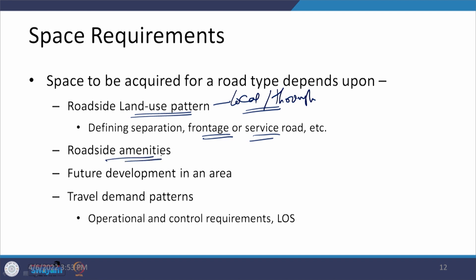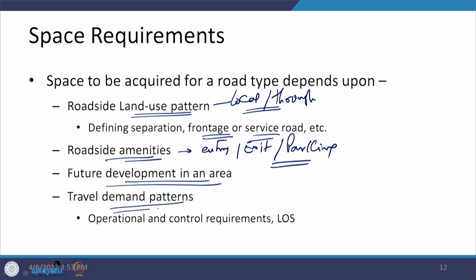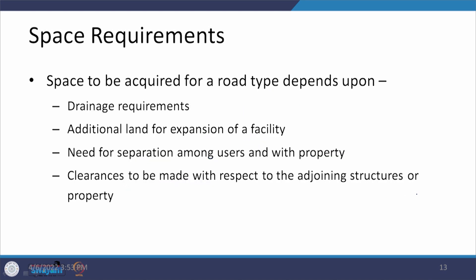Any other roadside amenities which are there, and in some cases you need to provide spaces for proper entry and exit as well as for parking — this is again going to create an impact on the size of a facility. Future development in an area we have already talked about. Travel demand patterns — when looking at operational conditions we talked about LOS in the previous interaction, where a desired LOS of B or C needs to be provided, and what is going to be the size of the facility is what we are looking at here. Then the drainage requirements — drains need to be provided on either side. If they are not there, in many cases it has been observed that the facility which was quite good when constructed deteriorated very fast and did not last its design life.